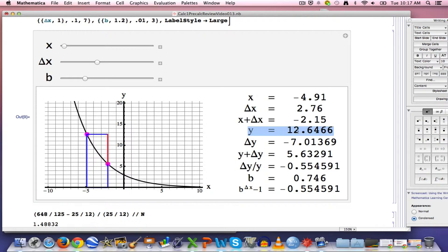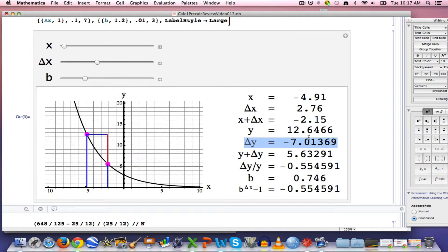The initial value of Y is 12.6. That's the second coordinate of this point. Delta Y is negative. The function is going down. This is exponential decay. Delta Y is about negative 7, bringing you down to Y plus delta Y, being smaller than Y, down at about 5.6.